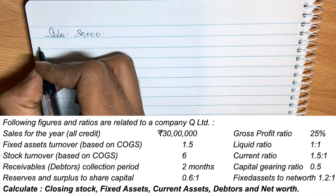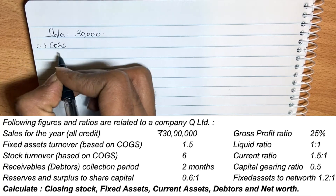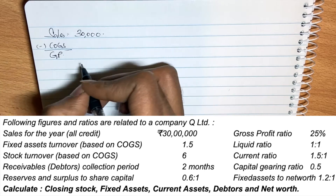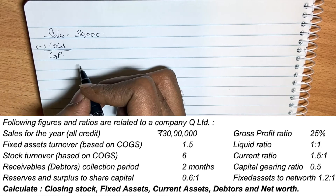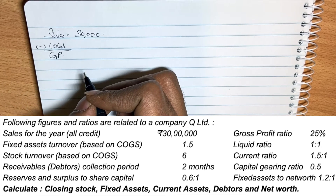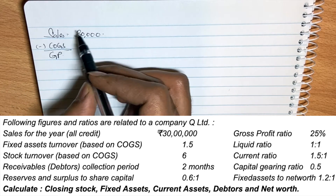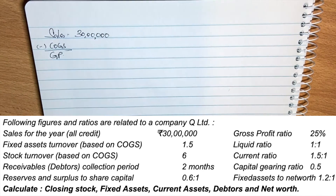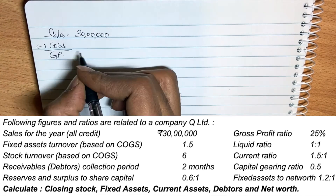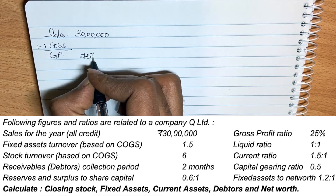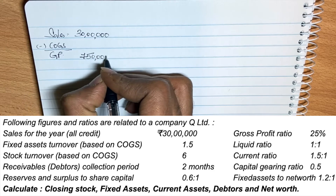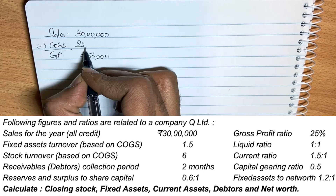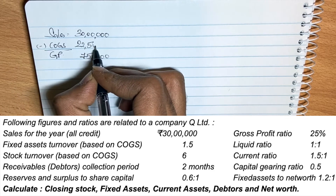Sales minus cost of goods sold equals gross profit. The gross profit ratio is 25%, and sales is 30 lakhs. So gross profit is 25% of 30 lakhs, which gives us 7,50,000. Therefore cost of goods sold is 22,50,000.